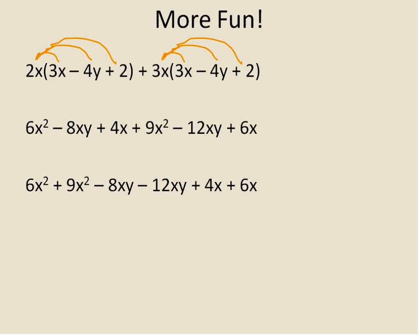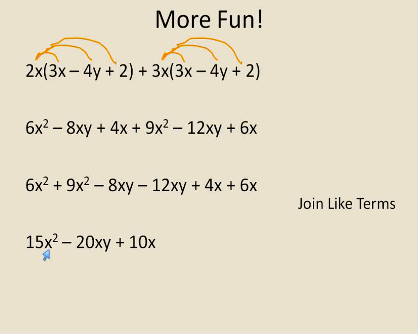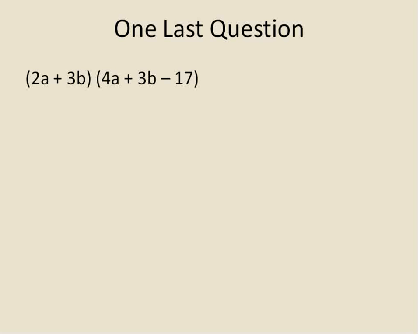In the next step, rearrange and group like terms together: 6x squared and 9x squared; then negative 8xy and negative 12xy; then 4x and 6x. Joining like terms: 6 and 9 is 15x squared; negative 8 and negative 12 is negative 20xy; and 4 plus 6 is 10x. Remember, x squared is different from x — those are not like terms and cannot be joined. The variable must be exactly the same. That is our final answer in the correct form.